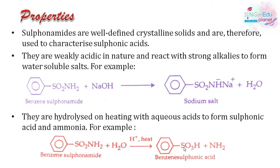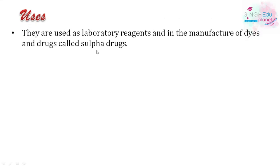Those were the properties. Finally, the uses of sulfonamides: they are used in the manufacture of dyes and drugs. The drugs derived from sulfonamides are called sulfa drugs. That covers everything about sulfonamides and the end of this chapter.